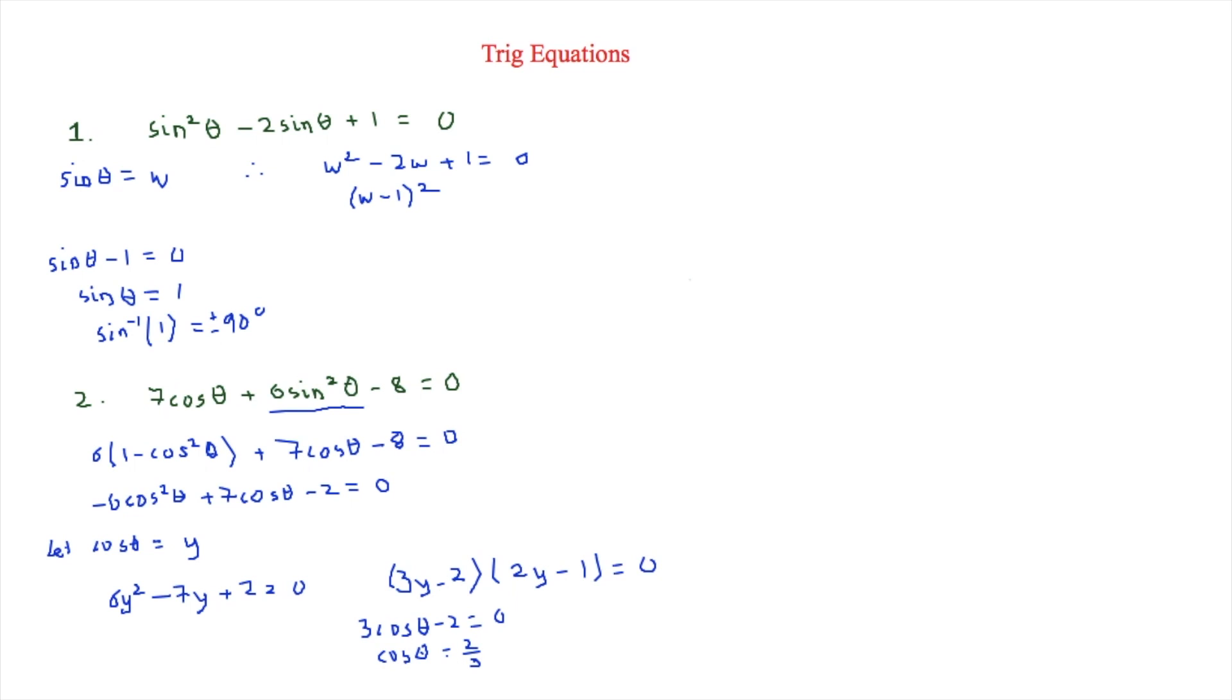Which will end up being cos theta is equal to 2 thirds. And once we've done the cos minus 1 of 2 thirds, we'll find out that theta is equal to 48.2.